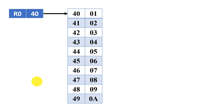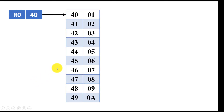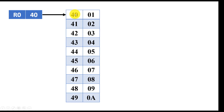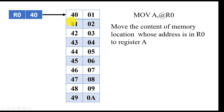Let us see what it exactly means. Here we have a memory where 40, 41, 42, 43 are all addresses and 01, 02, 03, 04, 05 are all data placed in these addresses. Register R0 of the 8051 is pointing to address 40 because it has the content 40, so this register is pointing to this address. Now if you write down an instruction like MOV A, @R0 — move the content of the memory location whose address is in R0 to register A.